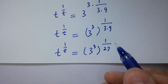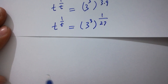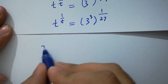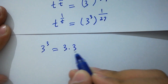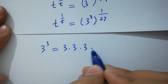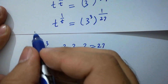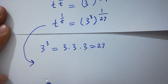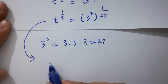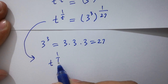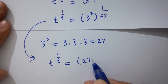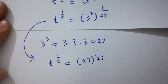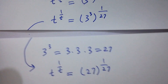In the next step, as we know, 3 to the power 3 equals 3 times 3 is 9, and 9 times 3 is 27. Then it will be t to the power 1 over t equals 3 cubed, which gives 27 to the whole power 1 over 27.